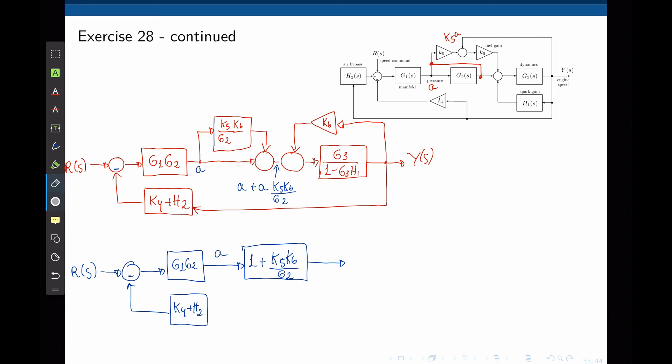Now moving on, we have a feedback loop here between K6, G3 and 1 minus G3H1. In this feedback loop, if we call the line function capital A and the feedback function B, the combination of this feedback loop will be A over 1 minus AB, which is G3 over 1 minus G3H1 divided by 1 minus K6 G3 over 1 minus G3H1. By simplifying this, we get G3 over 1 minus G3H1 minus K6 G3. And this is the function that replaces that feedback loop. And this is the function here. We can now finally close the loop, Y of S.